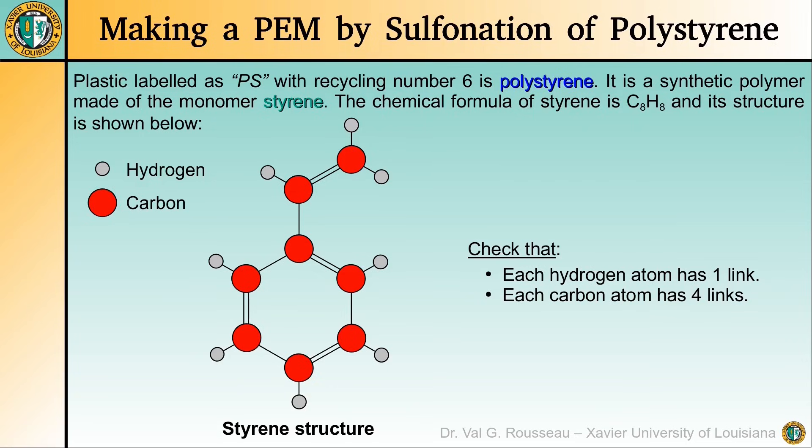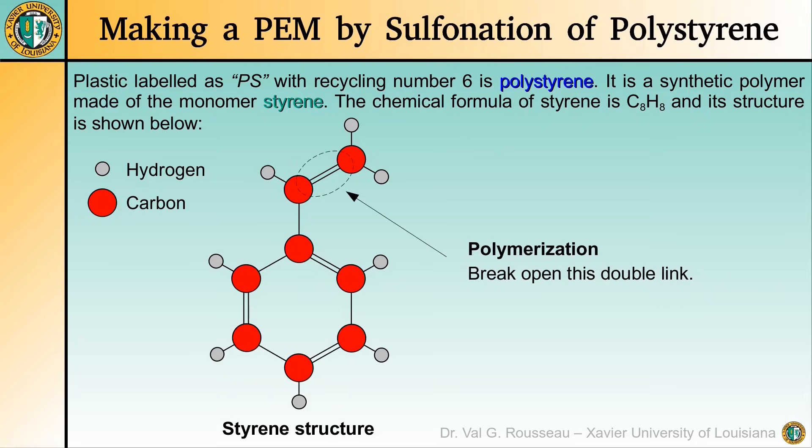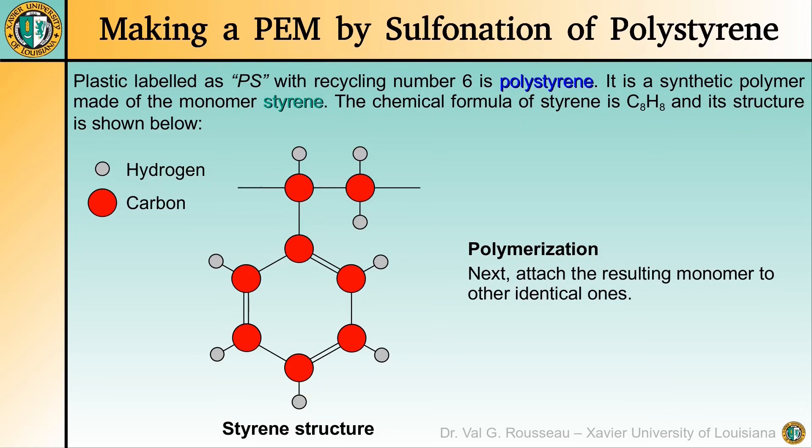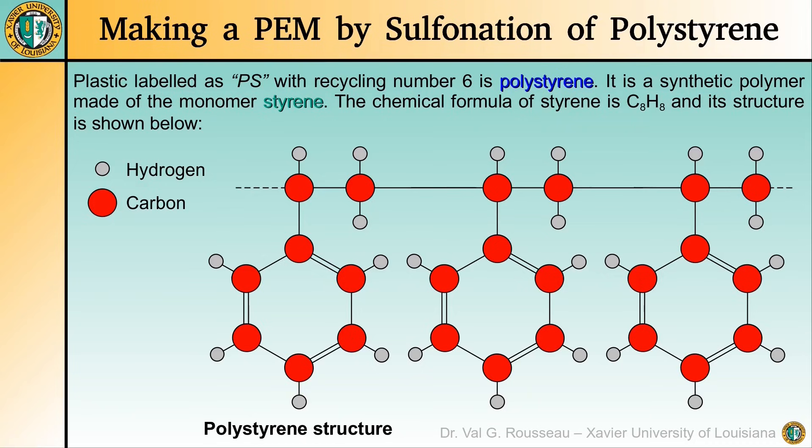We can notice here that some of the carbon atoms are doubly linked to others, and this is what allows for polymerization to occur. When making polystyrene, the double link that is shown is broken open. So now the two top carbon atoms have a free link on the left and on the right, so that identical monomers can be linked to each other and we obtain polystyrene.